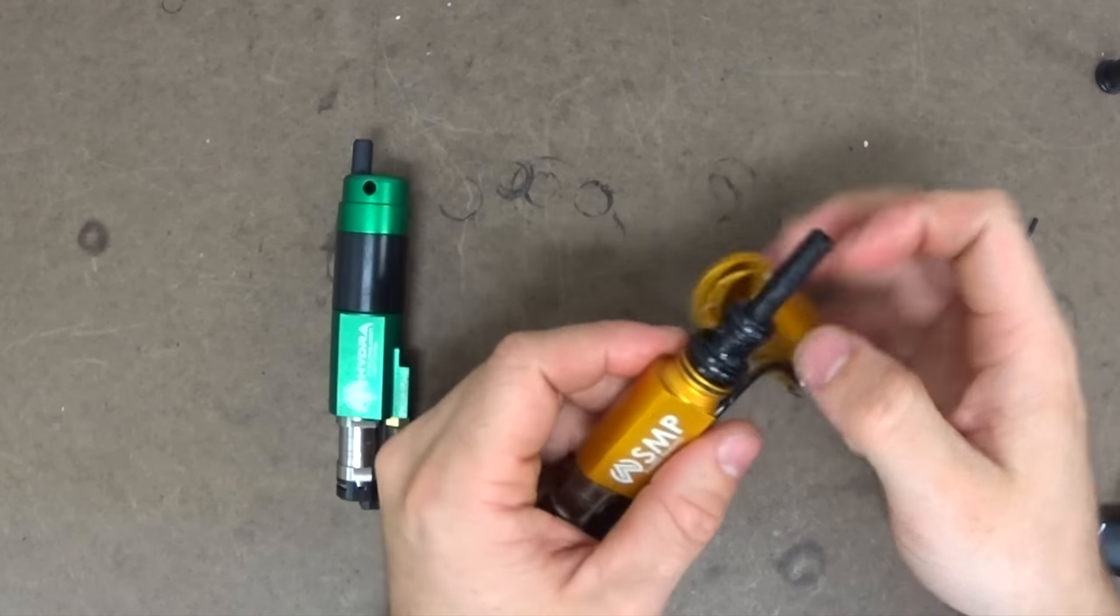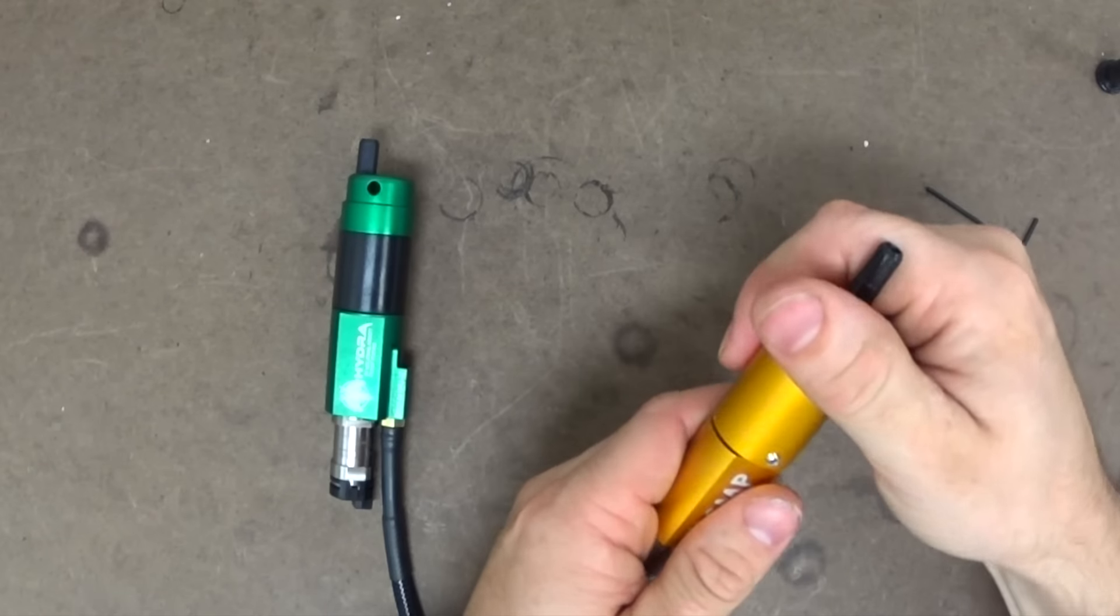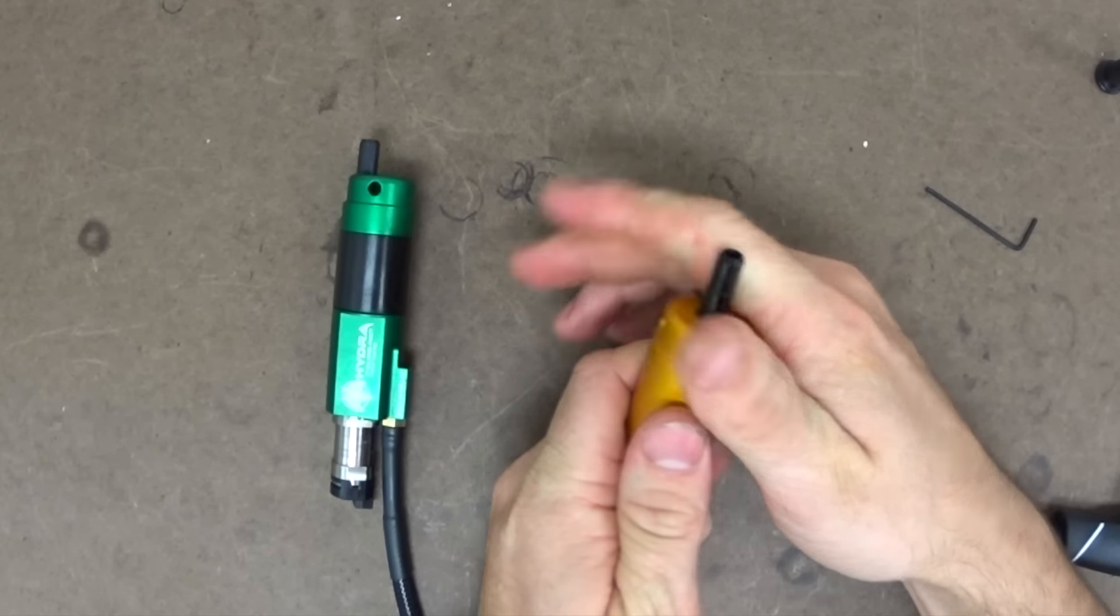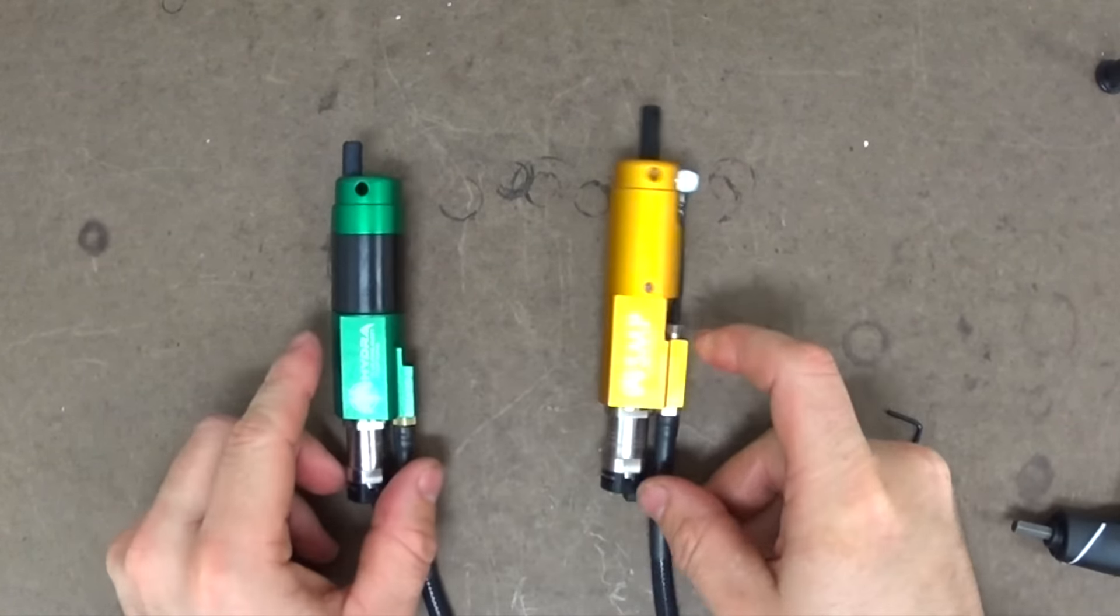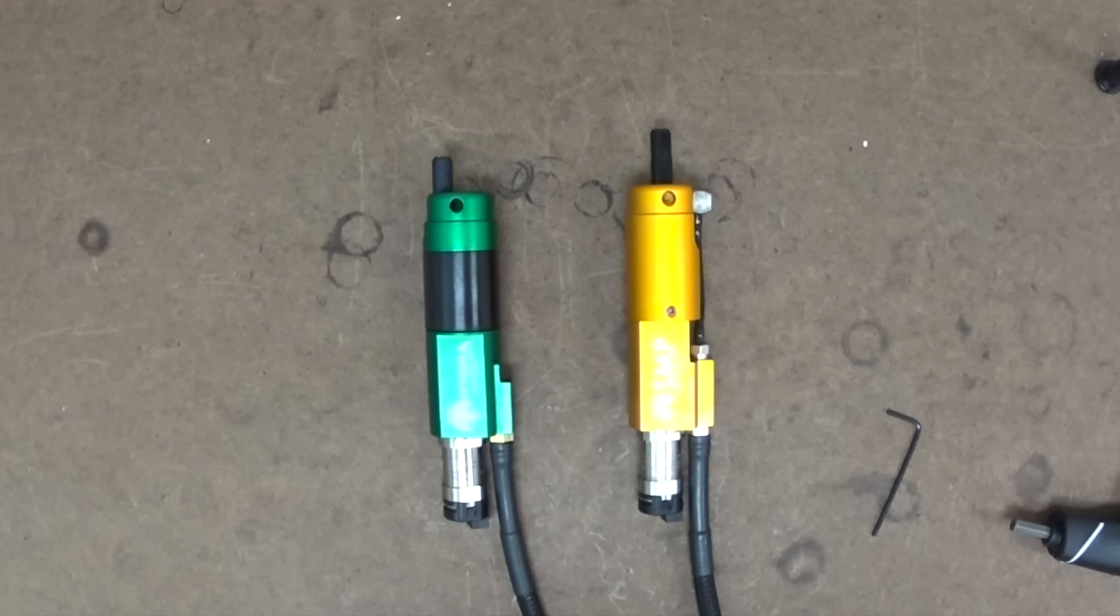So you can see reassembly for each system. It's also very simple. The nozzle goes back together. Housing goes back together and snug those down. So that's the Wolverine Airsoft SMP and Wolverine Airsoft Hydra. I hope this has been helpful. Let us know if you have any questions in the comments below.